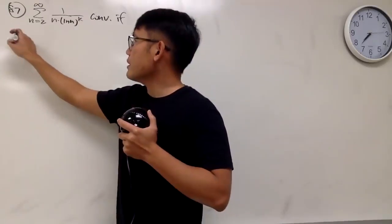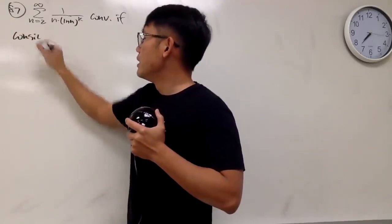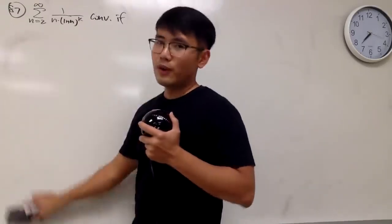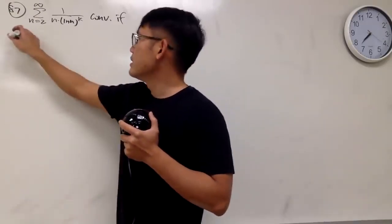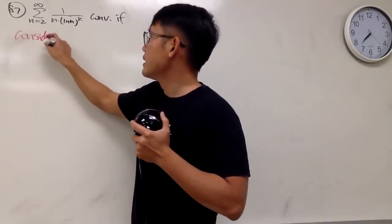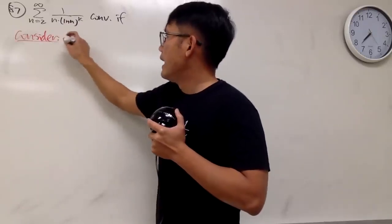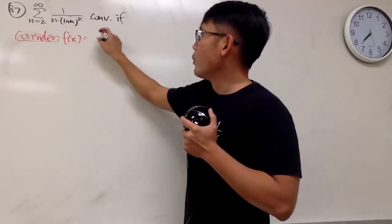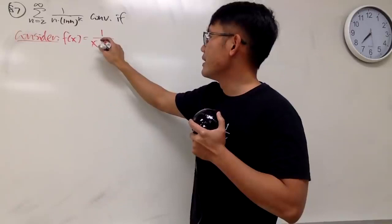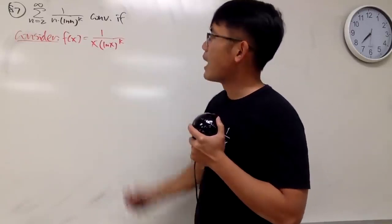So I'll just say, oh man, I didn't just follow my same format. I will say consider, still in red, f of x still 1 over x, right? And then parentheses ln x to the k's power.